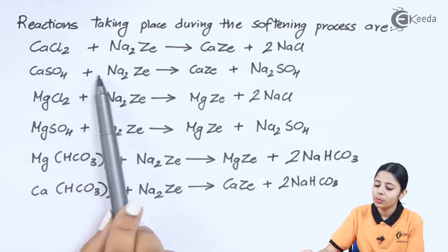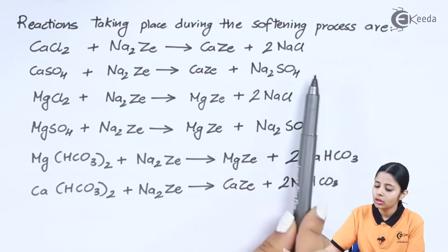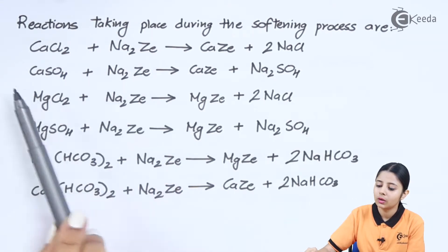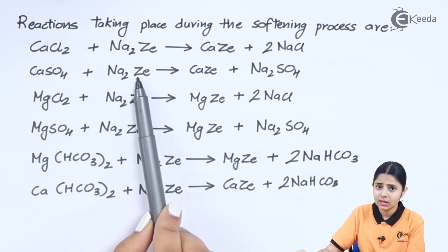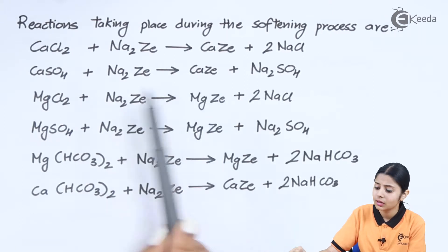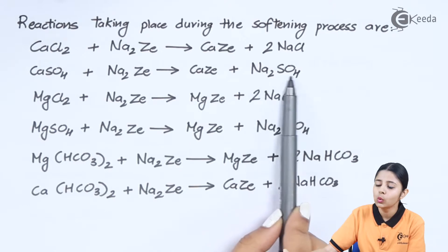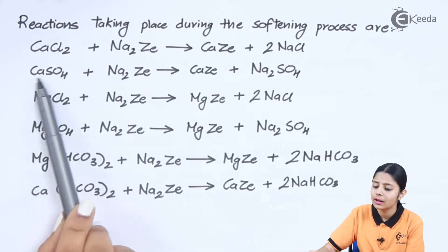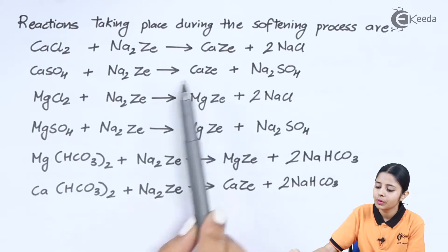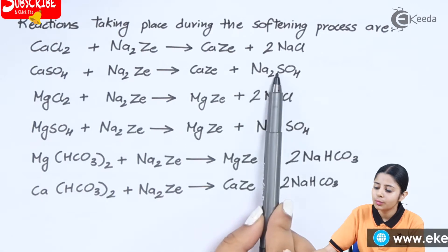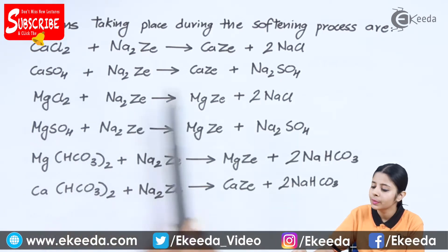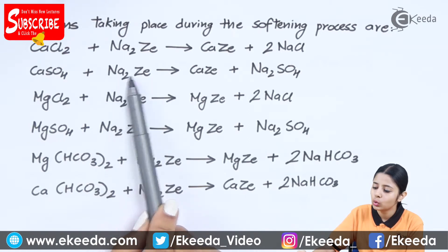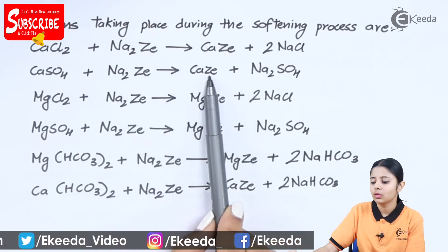The second reaction is: CaSO4 + Na2Ze → CaZe + Na2SO4. Again, the sodium zeolite exchanges its Na2 ions for Ca ions. The zeolite previously attached to sodium is now attached to calcium on the product side, and Na combines with SO4 to form Na2SO4. Balancing: 1 Ca on each side, 1 S on each side, O4 on each side, Na2 on each side, and 1 zeolite on each side — fully balanced.